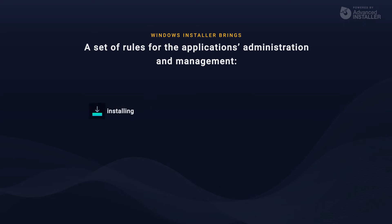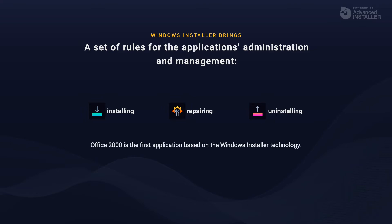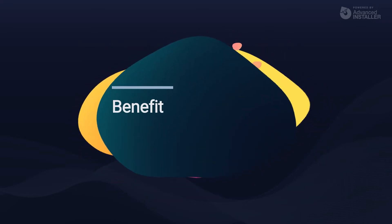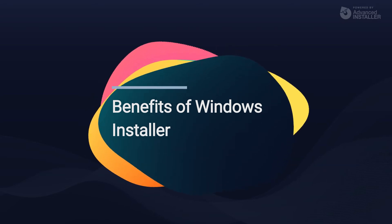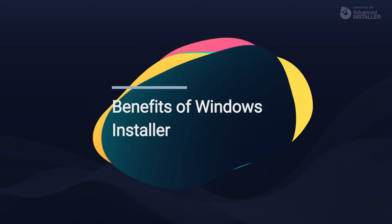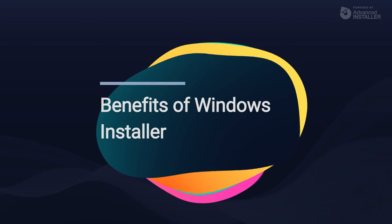Windows Installer came with a much-expected set of common rules in application administration and management — for example, installing, repairing, and uninstalling. It led to the disappearance of the problems mentioned above and made the administrator's work easier. It was published at the same time as Office 2000, becoming the first application based on the Windows Installer technology. We really need to go through the core functionalities that Windows Installer brought, since it marks the standardization of application packaging.